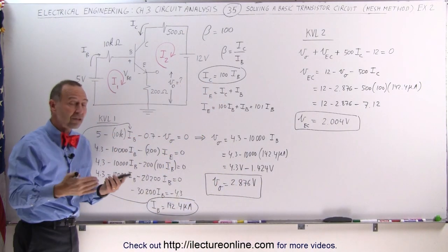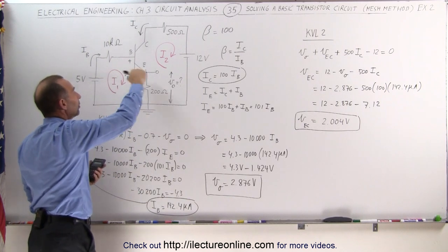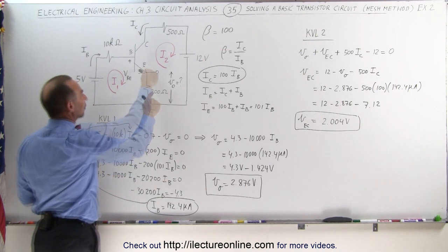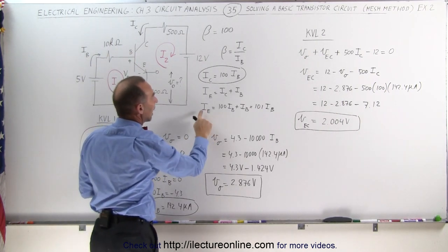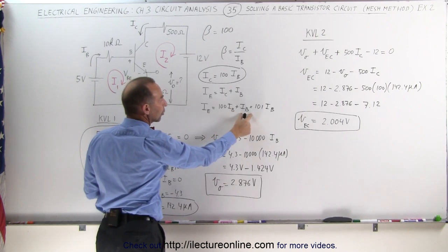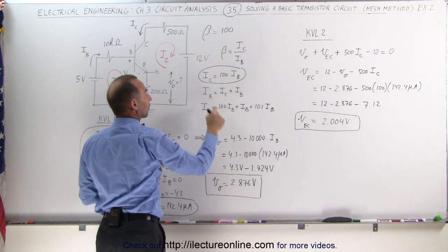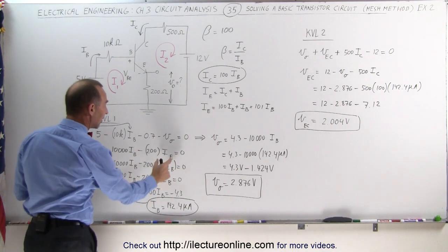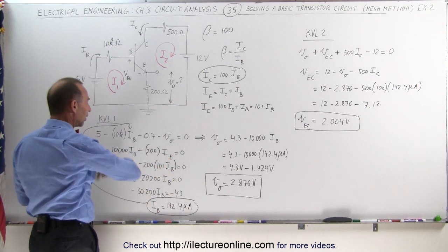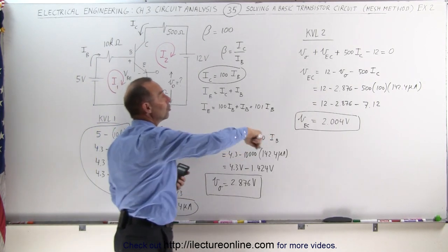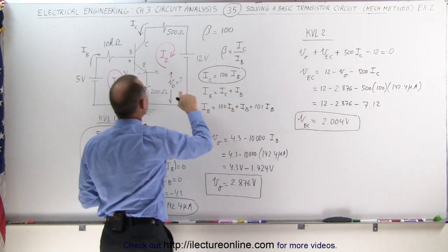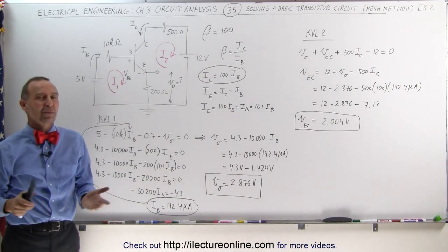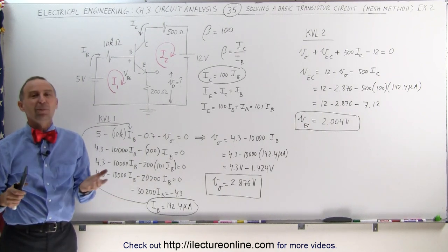Now we have everything we need about the circuit. The methodology was to use the mesh method — add up all voltages around mesh one and mesh two. With mesh one, I expressed the emitter current in terms of the base current using the relationship I sub E equals I sub C plus I sub B, where I sub C is 100 times I sub B, giving 101 times the base current. I solved for the base current, found V sub O, then used mesh two to find the voltage between the collector and the emitter. That's how we find circuit quantities using the mesh method.